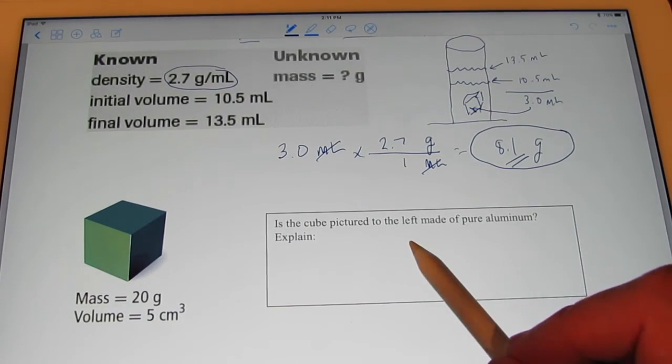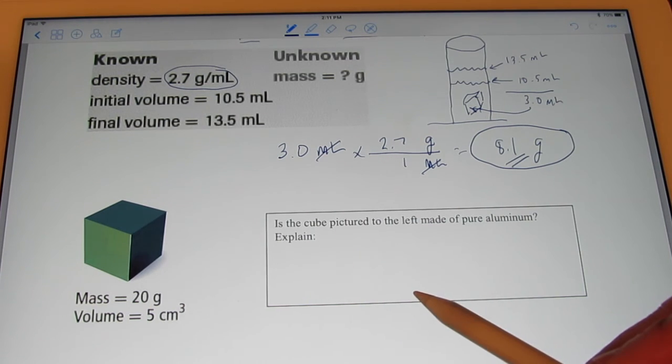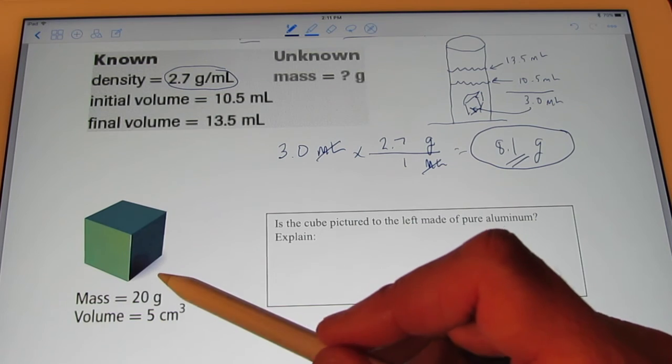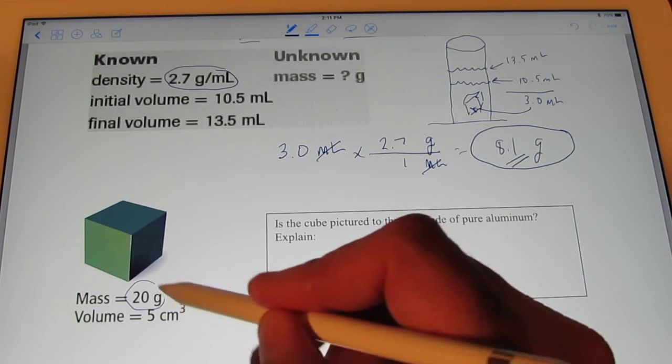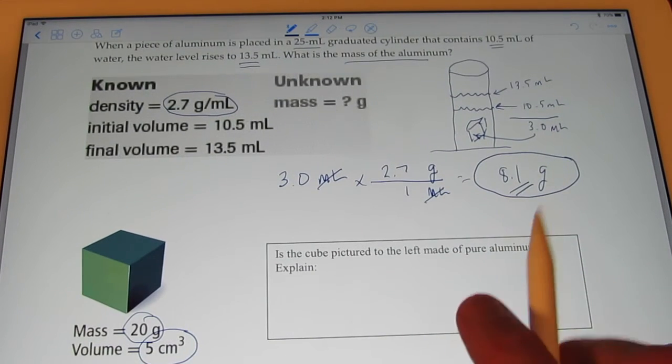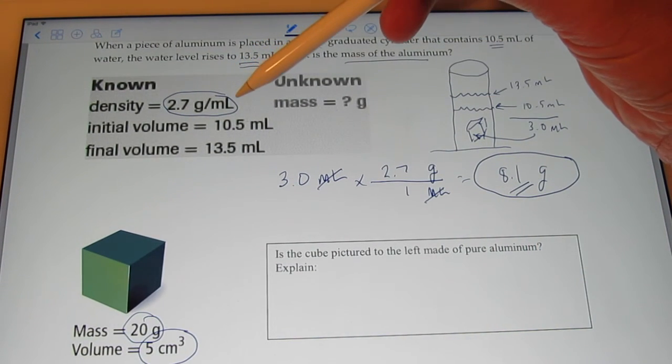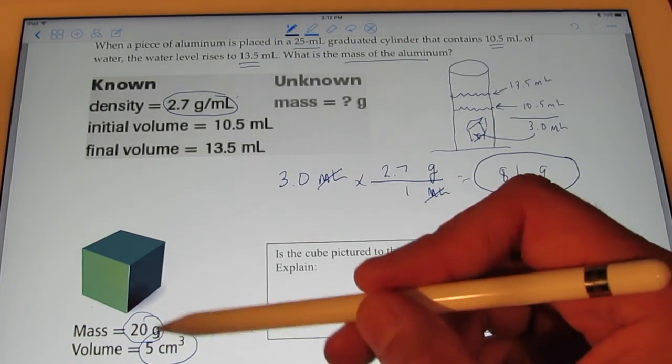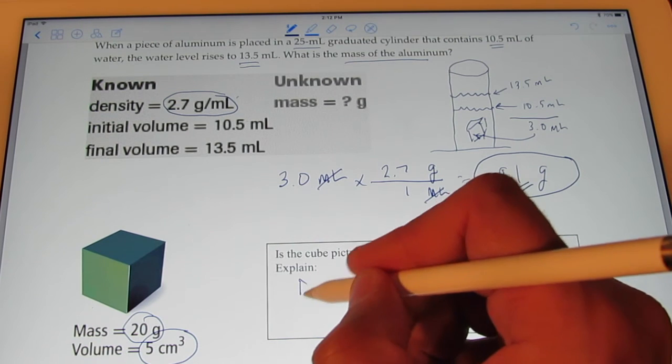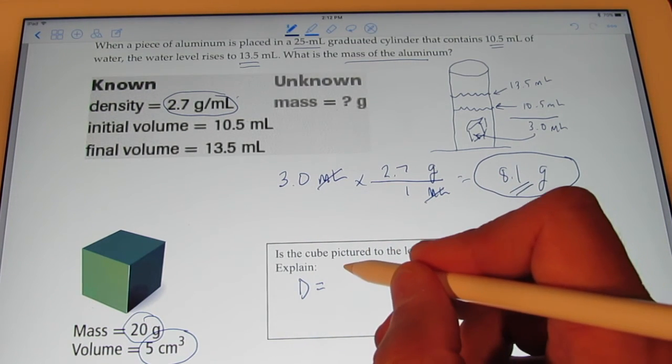Let's see. Is the cube picture to the left pure aluminum? So, here's a cube. I want to know if this is aluminum or not. So, the mass is 20 grams, and the volume is 5 cubic centimeters. Now, don't I know the density of aluminum from the previous problem is 2.7? So, if the density of this is 2.7, it could be aluminum. So, let's find the density of that cube.